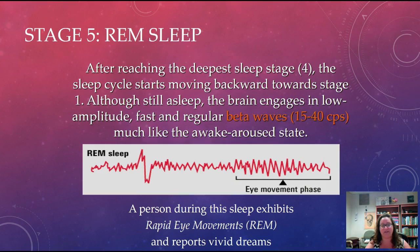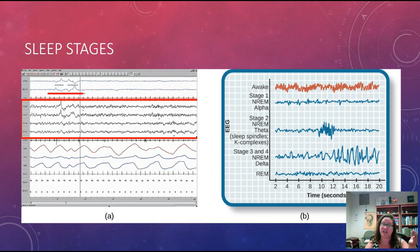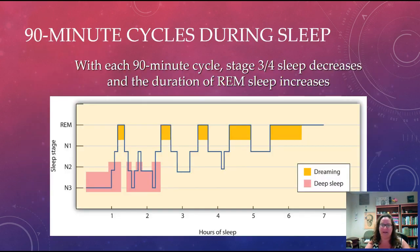In a sleep study, you'd be able to see the patterns of brain activity — the awake stage looks more like the REM sleep stage. We can also see sleep spindles and K-complexes in stage two sleep. We can actually read someone's sleep using the EEG and understand what stages they're going through.